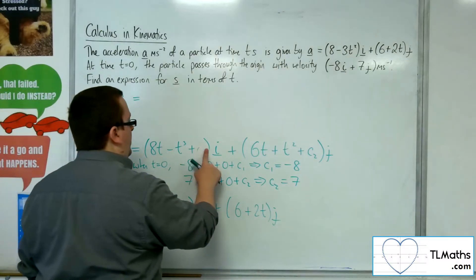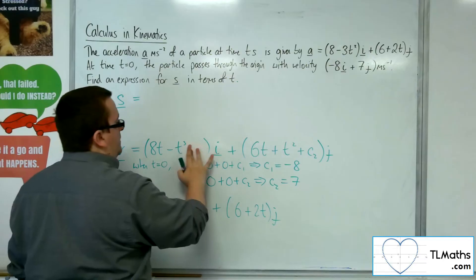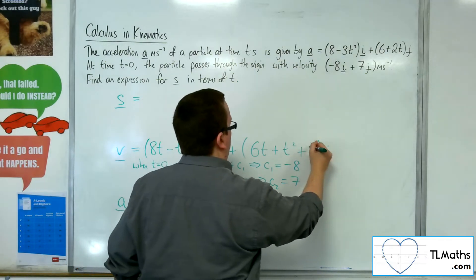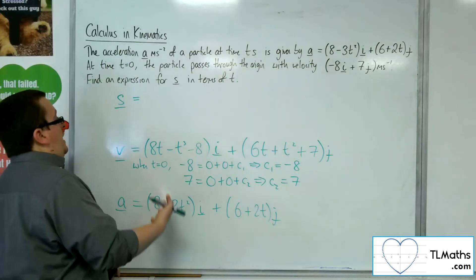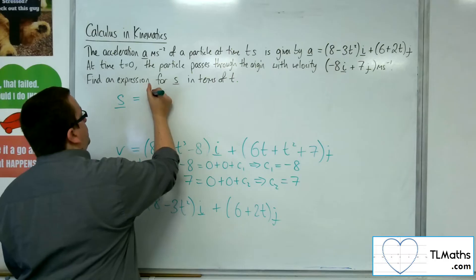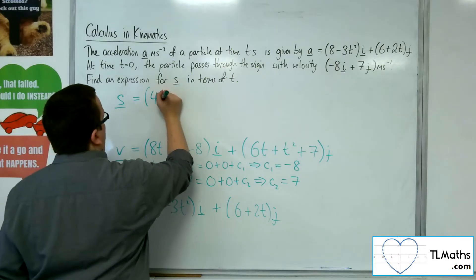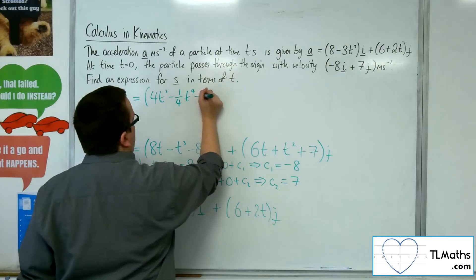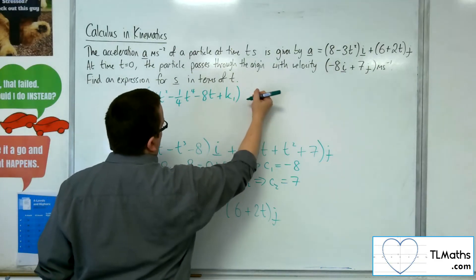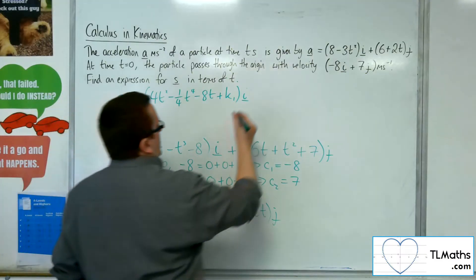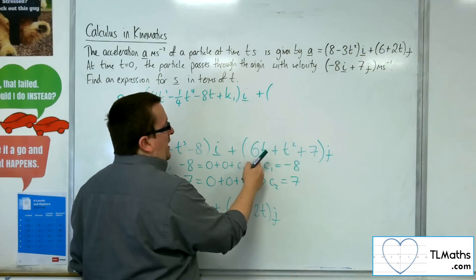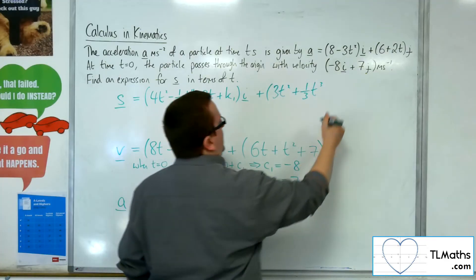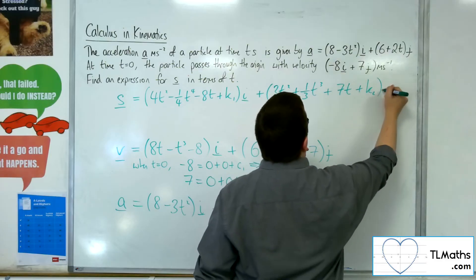We now have our velocity, where c1 is minus 8 and c2 is positive 7. Now we can integrate again to get the displacement. So 8t integrates to 4t squared, t cubed integrates to minus a quarter t to the 4, and minus 8 integrates to minus 8t, plus another constant k1 i. Integrating the j component: 6t integrates to 3t squared, plus a third t cubed, plus 7t, plus another constant k2 j.